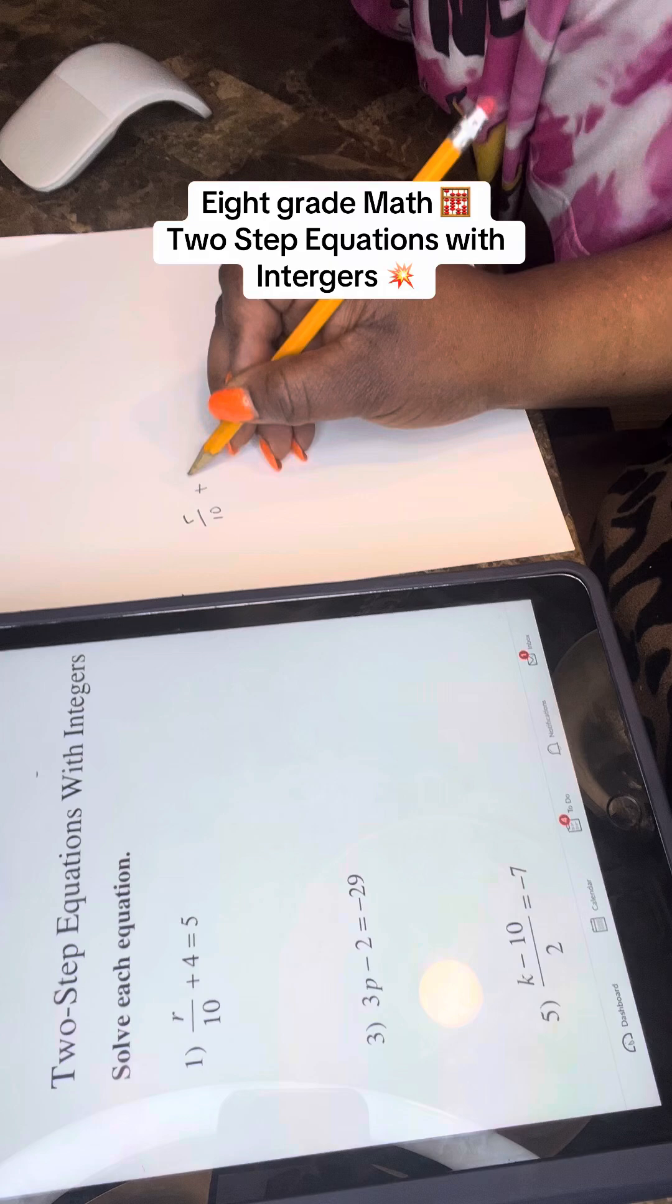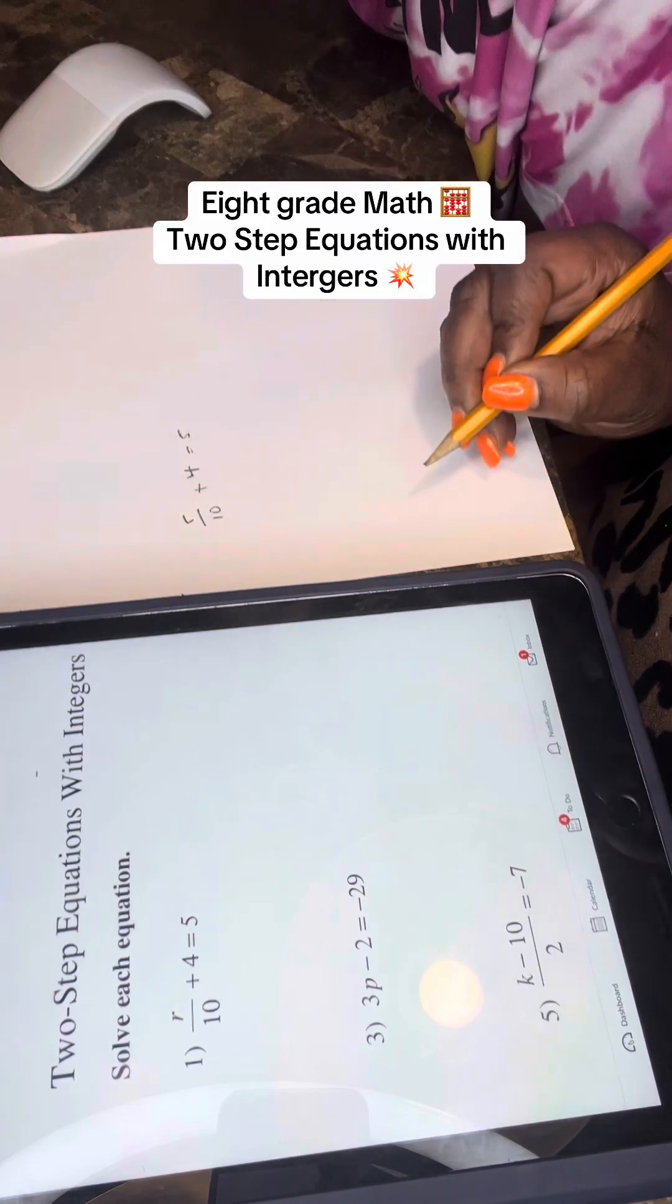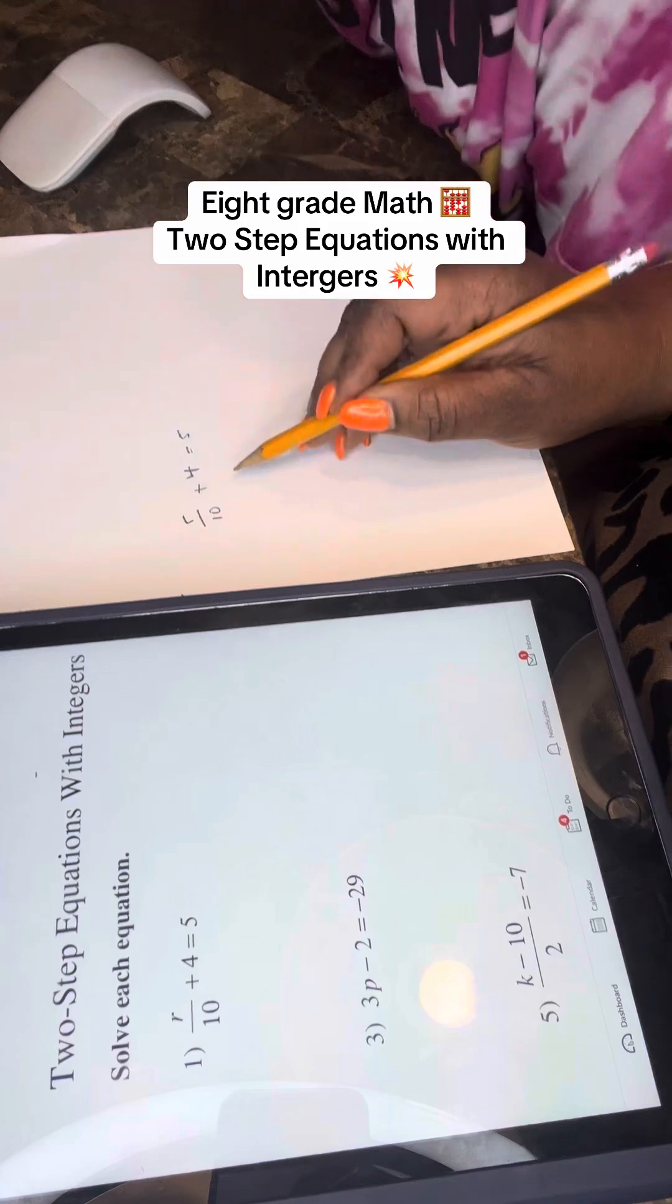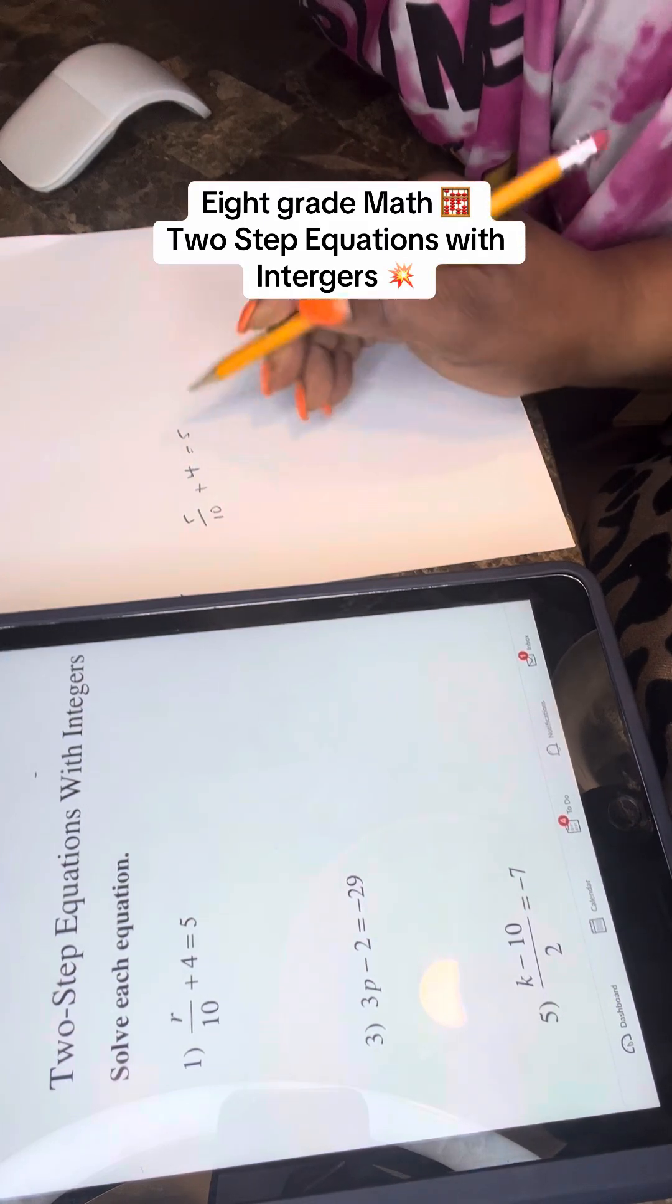So when you have a question like this, arrow all over 10 plus 4, yeah, it goes to 5. We can see that, okay? The first thing you have to do is you have to, you see this one is an individual number, do you understand?